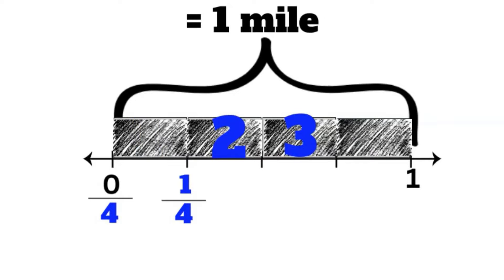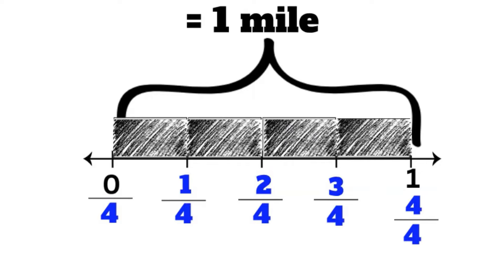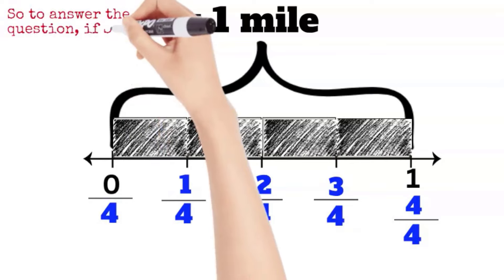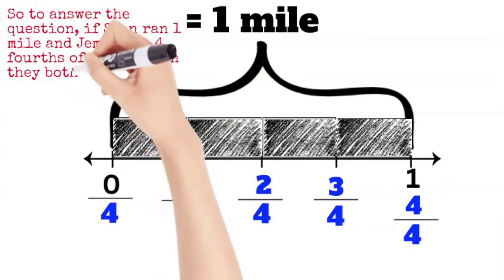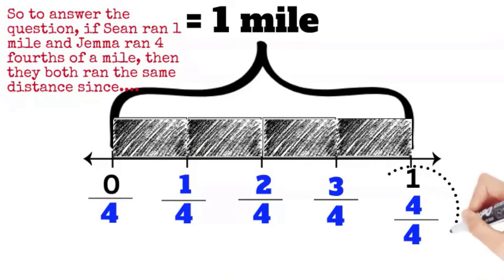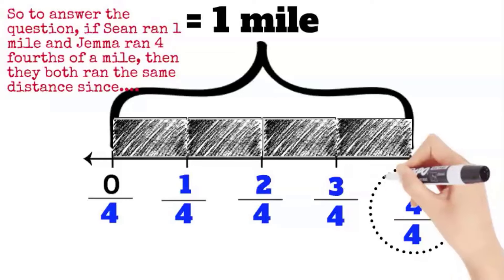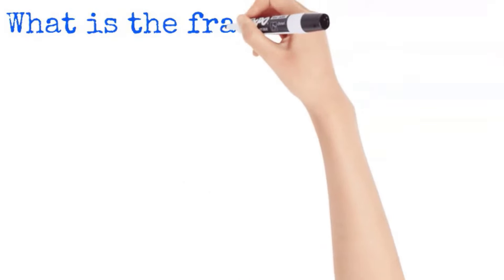So this piece is one fourth, then this part is two fourths, this part is three fourths, and then the last part is four fourths. Notice how four fourths and one mile is the same. So to answer the question: if Sean ran one mile and Gemma ran four fourths of a mile, they both ran the same distance since one whole is the same as four fourths. When your numerator and denominator are the same, then it's one whole.